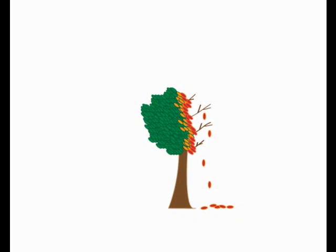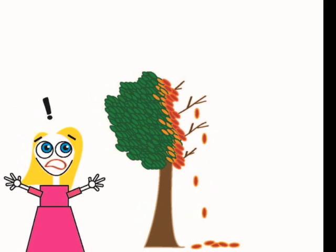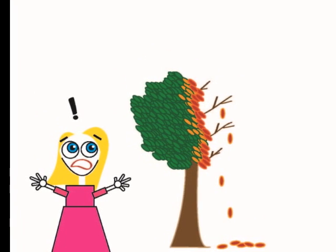Most urban tree problems begin with the tree beginning to show symptoms. These catch the eye of a concerned homeowner who sees her tree and wants something to be done about it.